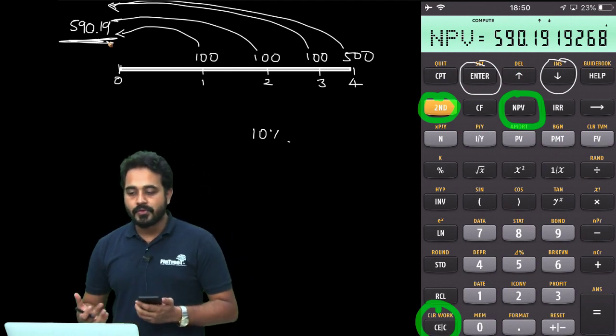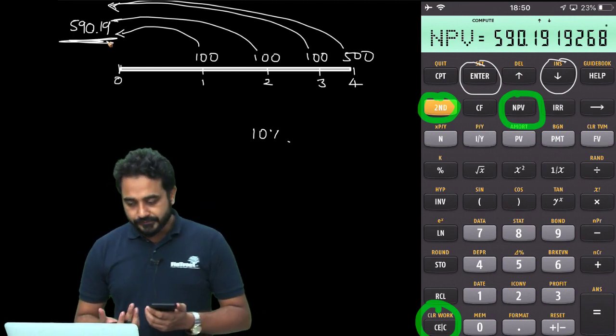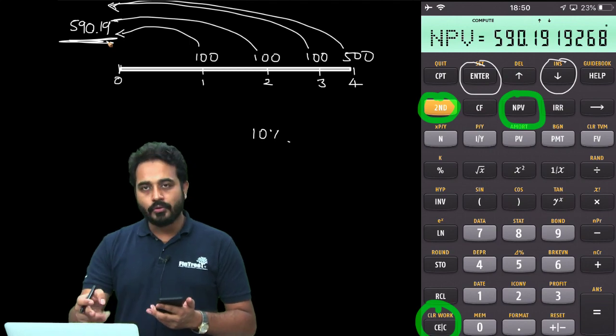So, this is how you make use of the NPV function of the calculator. Now, is there a shortcut to do this? Yes.